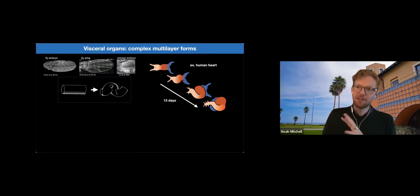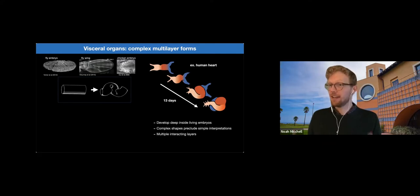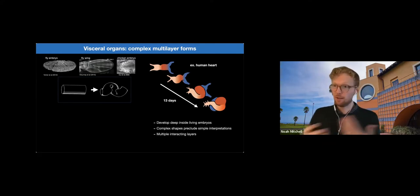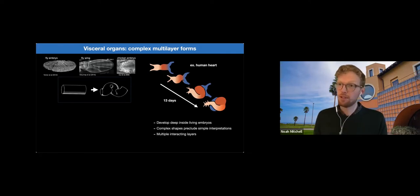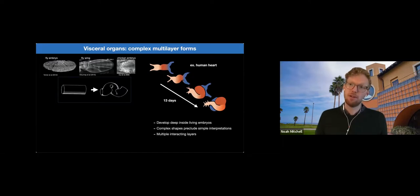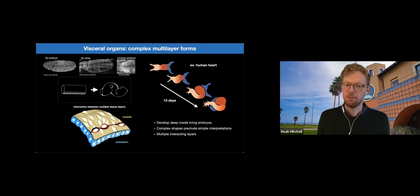Now, accessing these visceral organ systems is difficult for several reasons. They develop deep inside living embryos. So we have to do deep tissue imaging unless we can take them out and culture them. Real organs have complex shapes, which preclude simple interpretations of their dynamics. And moreover, they consist of multiple tissue layers. And these multiple tissue layers will interact in order to sculpt themselves into those complex shapes.